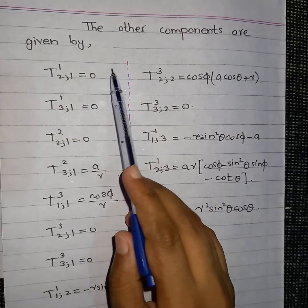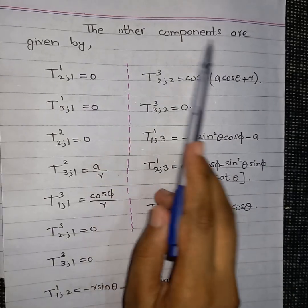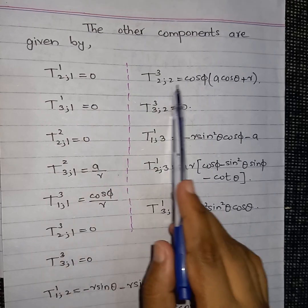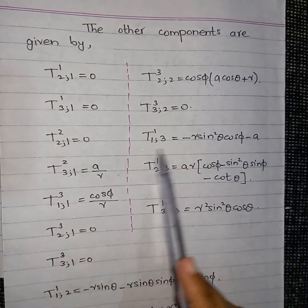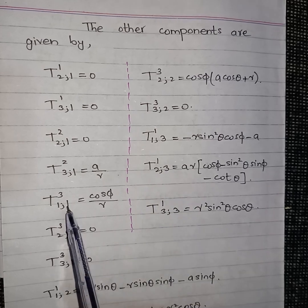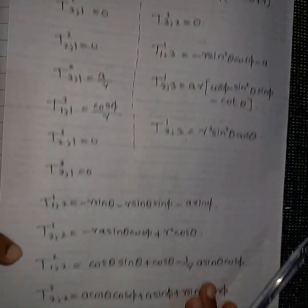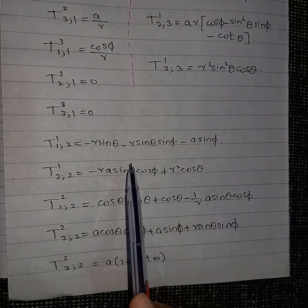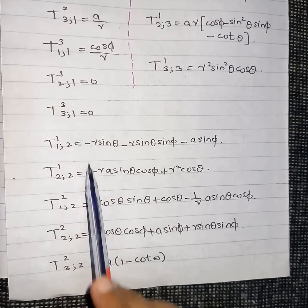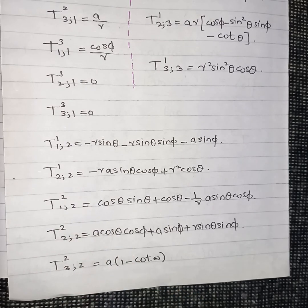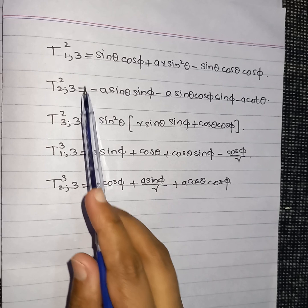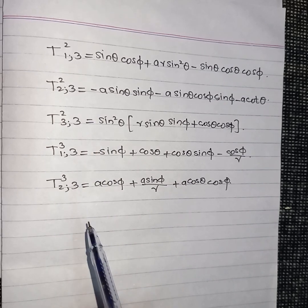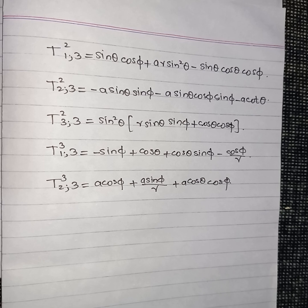In a similar manner all other covariant derivatives are computed, giving a total of 27 values as listed here. I have left the remaining components as an exercise for students — you can verify all the covariant derivatives of the given tensor. I have worked through a few to demonstrate the method.